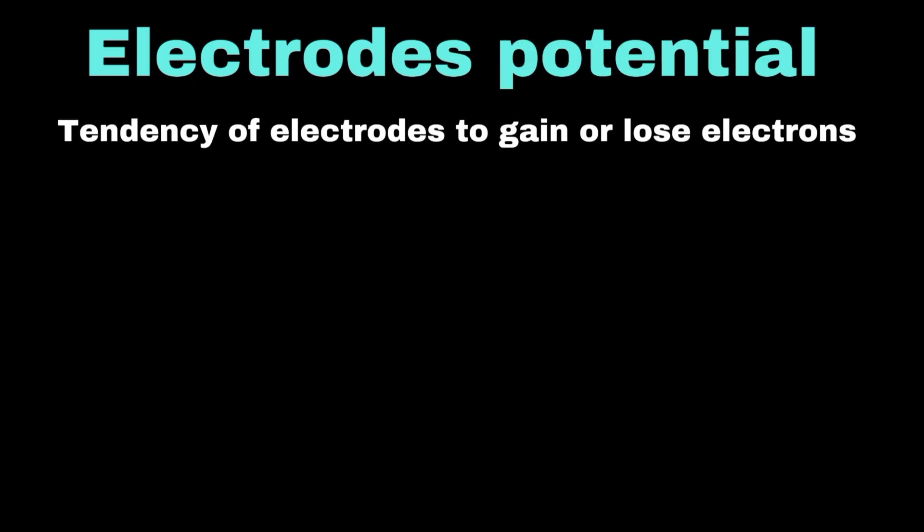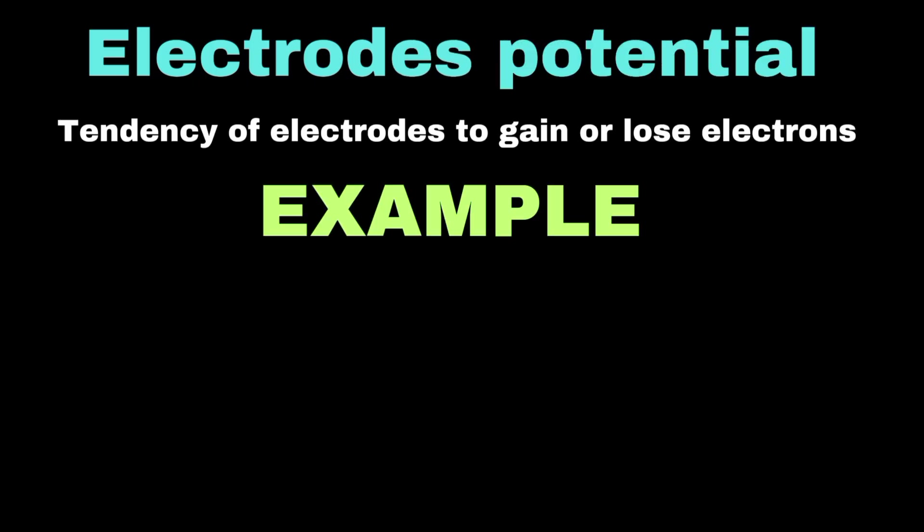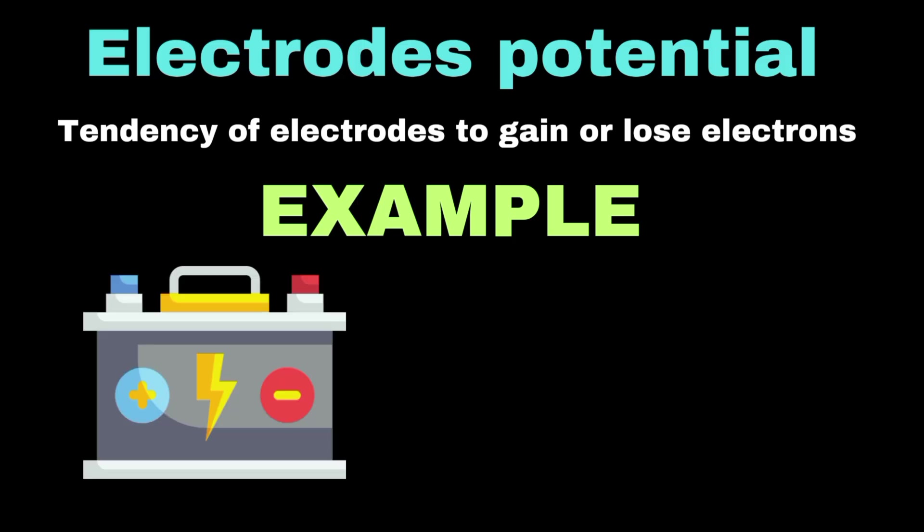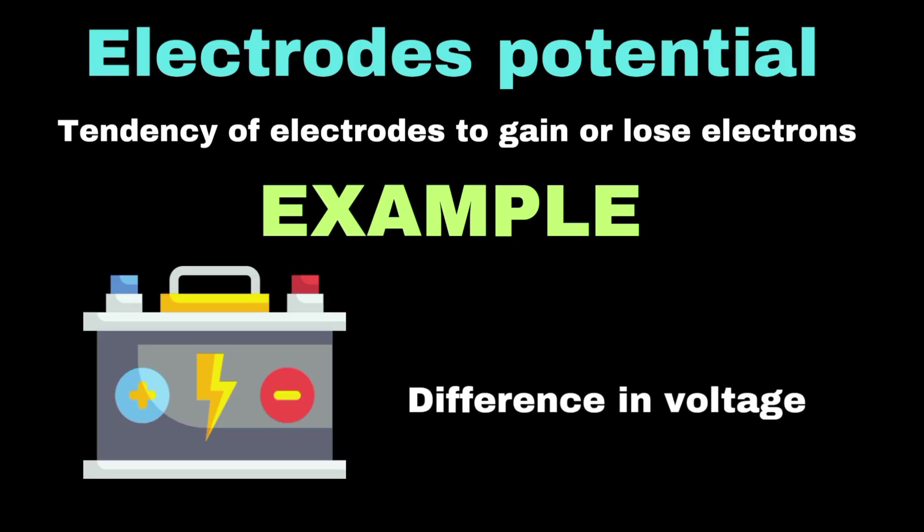Moving to electrode potentials, these can be defined as the tendency of an electrode to gain or lose electrons. In a car battery, the lead electrode has a different potential than the lead dioxide electrode. This difference in potential creates the voltage that powers your car's electrical systems.